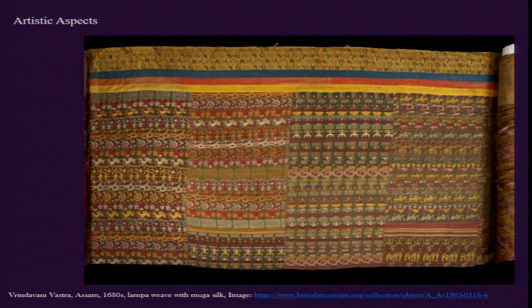On screen we have this very rare form of textile called Vrindavanivastra, made in the state of Assam in North Eastern India. This is a late 17th century Vrindavanivastra, now in the collection of the British Museum. In this one we find that there are some 12 fragments of vertical strips which were put together and made into this one particular fabric.